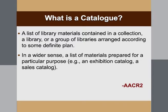Before entering into the discussion, we should know what a catalog is. It is simply a list of library materials contained in a collection, a library, or a group of libraries arranged according to some definite plan. In the general context, a catalog is a list of materials prepared for a particular purpose — for example, an exhibition catalog or a sales catalog. This has been defined by AACR2. We also have to know the basic difference between catalog and cataloging: a catalog is the list, while cataloging is the process of creating or making that list.